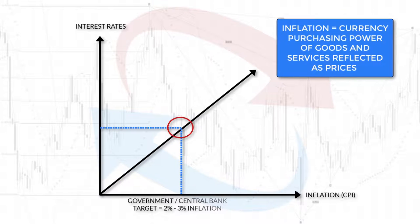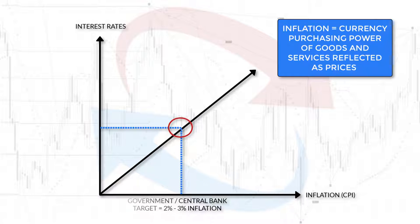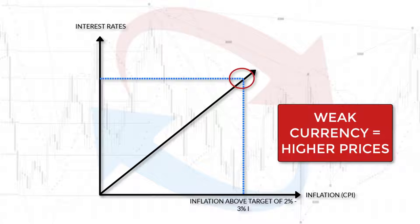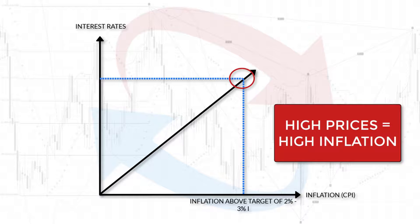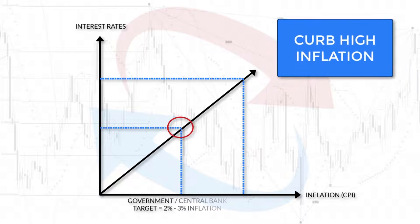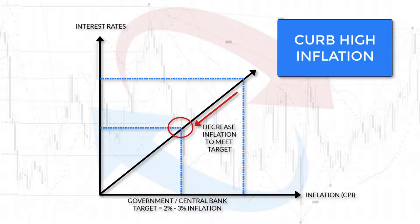Inflation is the purchasing power of a currency reflected as prices for goods and services. If a currency is weak, more of that currency is needed to be exchanged for goods and services. This is reflected in higher prices for goods and services, otherwise known as high inflation. In an attempt to curb inflation, strengthen the currency to attract investors, and meet their interest rate target, central banks will raise interest rates.